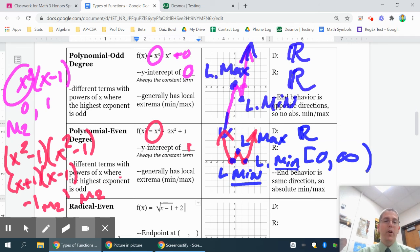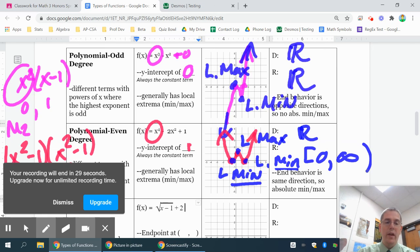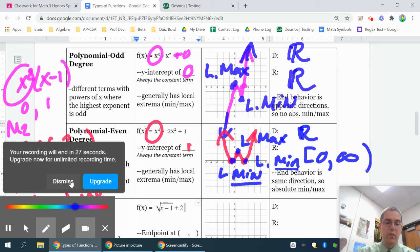So pretty much even degree polynomials will have a range that's limited by your absolute maximum or minimum. Odd degree polynomials, since the ends are going in different directions, will have a range of all real numbers. We'll go ahead and in the next video, we'll talk about some different types of functions.